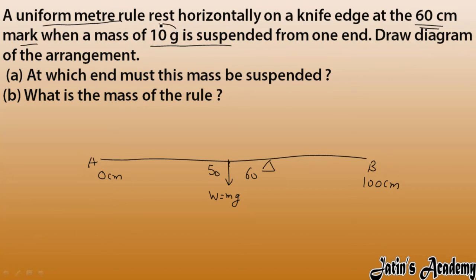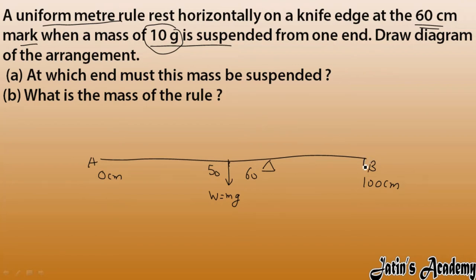Now let's see where we have to attach the 10 gram mass so that the whole meter rule is balanced. The weight of the rule is creating an anti-clockwise moment, so we have to attach the mass in such a way that it creates a clockwise moment. For a clockwise moment, we attach the mass on the opposite side — so here, to the right of the knife edge.